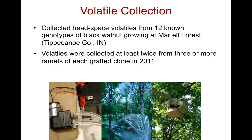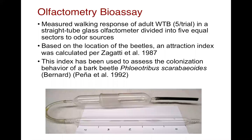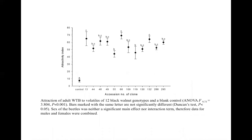We took those volatile collection extracts to the lab and analyzed them by GCMS — gas chromatography mass spectrometry. What we found is that they contain a lot of compounds, many monoterpenes and common green leaf volatiles and plant compounds common among many plants. This shows that those extracts do contain volatile compounds. We can then test the attraction of beetles to these volatile extracts of black walnut in an olfactometry bioassay.